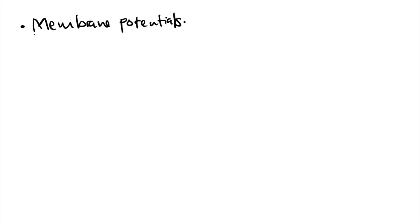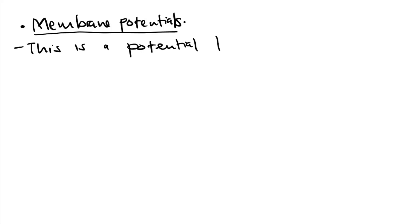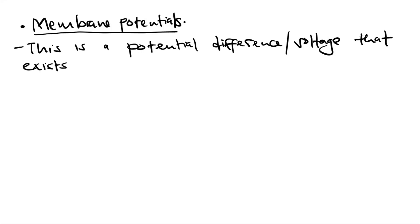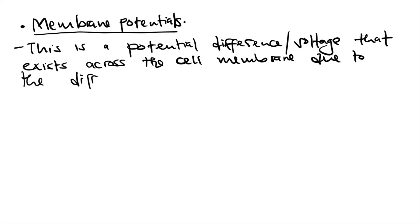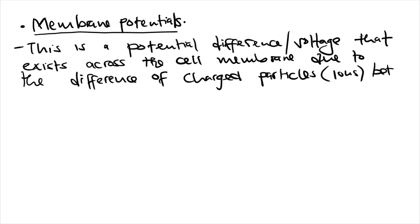A membrane potential is simply a potential difference — also known as voltage — that exists across the cell membrane, due to the difference of charged particles, which we call ions.